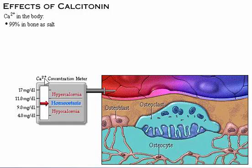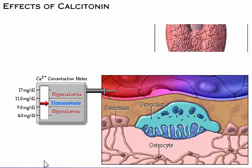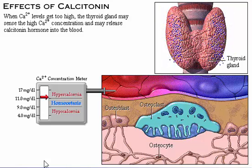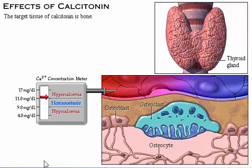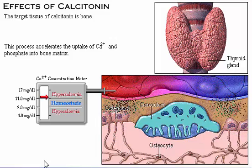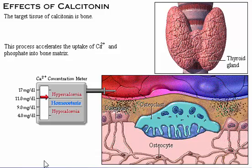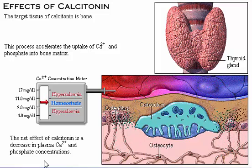Approximately 99% of the calcium in the body resides in bone as a salt, and about 1% is dissolved in the extracellular fluids. When levels of plasma calcium get too high, the thyroid gland may sense the high calcium concentration and release calcitonin hormone. Calcitonin inhibits the action of osteoclasts, which break down bone, and stimulates osteoblasts, which cause bone formation. This accelerates the uptake of calcium and phosphate into bone matrix, and the net effect is a decrease in plasma calcium and phosphate concentrations.